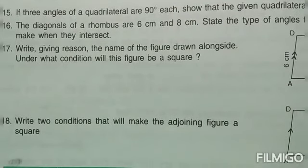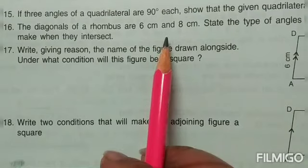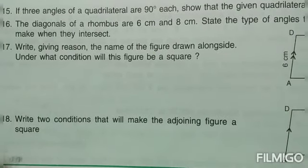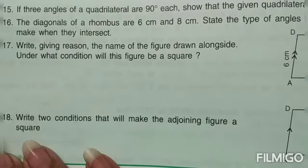The diagonals of a rhombus are 6 and 8 centimeters — state the type of angle they make when they intersect. Whenever diagonals bisect each other and meet, they always form a 90-degree angle. For the next question, the figure has all four sides equal at 6 each and running parallel, making it a rhombus. It can be called a square only if all four angles are 90 degrees each.